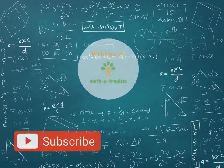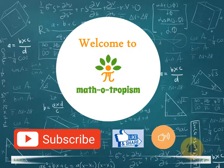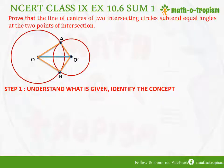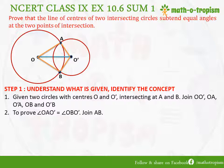Welcome to Mathotropism. Understanding what is given and identifying the concept with which we can prove this: we have two circles and we are joining OO', OA, AO', OB, O'B, and we need to prove that angle OAO' is equal to angle OBO'. We will also join AB.